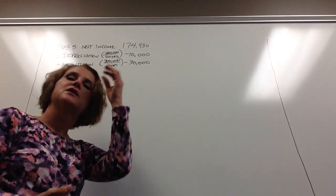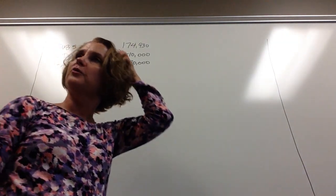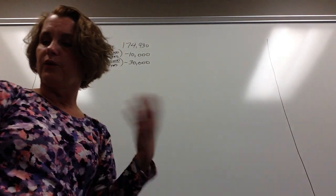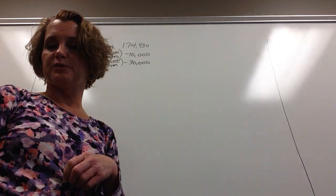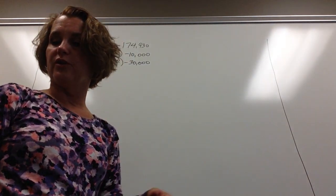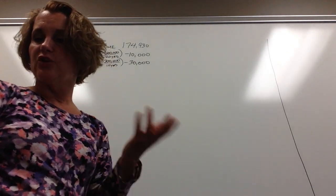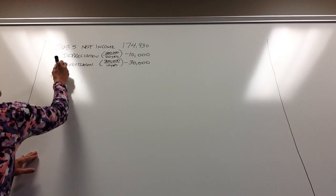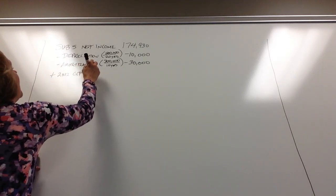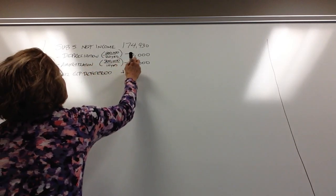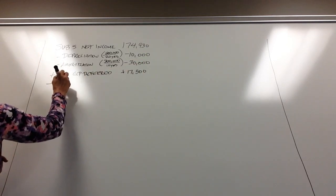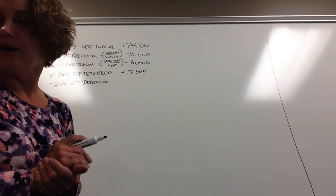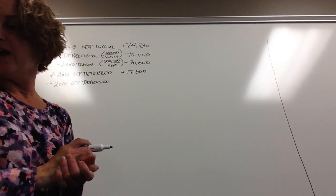Next we deal with intercompany sales. If we have gross profit left in ending inventory, we have to defer it; when that inventory is actually sold, we allow the profit to come in. The 2012 deferred gross profit of $17,500 is now sold in 2013, so we add that back into income. Then we defer the 2013 gross profit of $28,000, which is currently in ending inventory — we take that out of equity income.